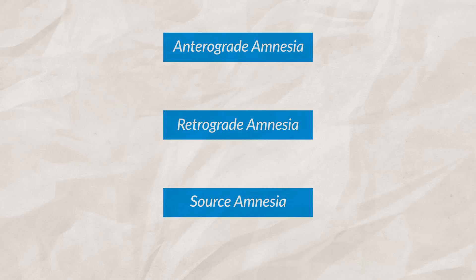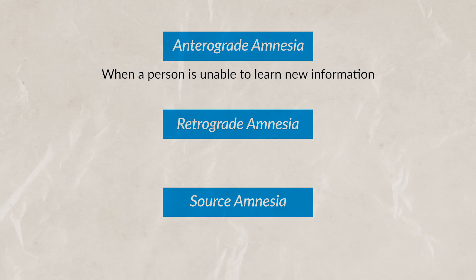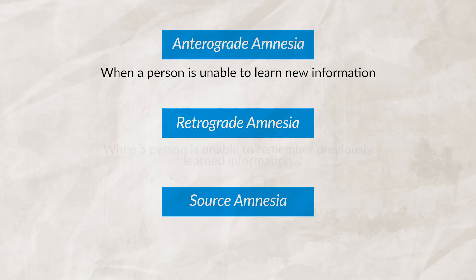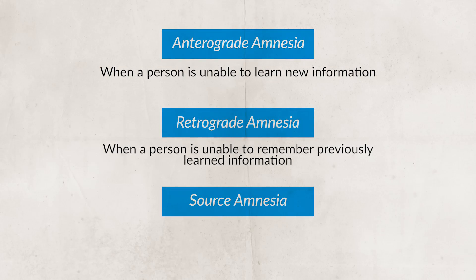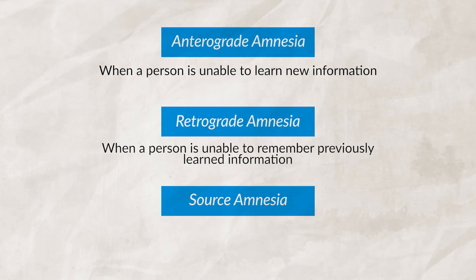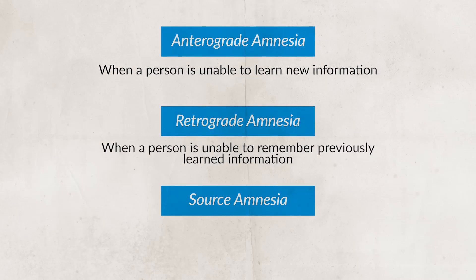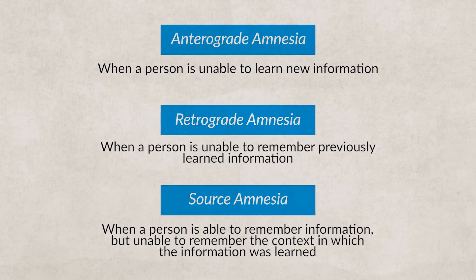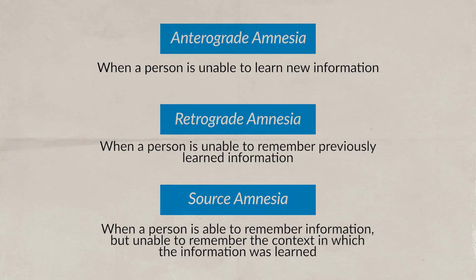When looking at memory, we can also see memory loss, which happens due to amnesia — when a person either temporarily or permanently loses parts of their memory. Anterograde amnesia is when a person can no longer form new memories; this type almost always involves something happening to the hippocampus. Retrograde amnesia is when a person can no longer retrieve past information, which could occur because of a blow to the head. There is also source amnesia, which is when you cannot remember where you heard the information — for example, if you heard a funny story from someone and then later tell them the story they originally told you.